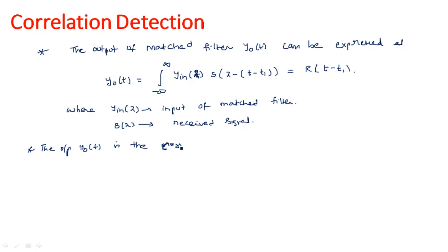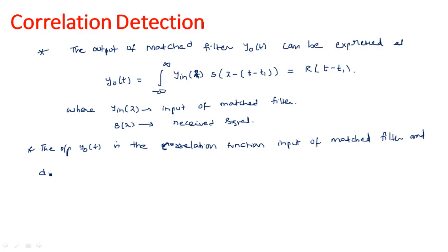It is the correlation function of the input of the matched filter, y_in(t), and another signal — a delayed replica — because it has a delay of some time period. So it is a delayed replica of the transmitted signal, which is the signal that has been transmitted into the receiving section.